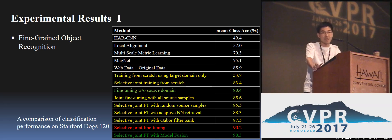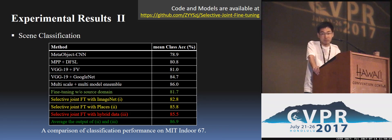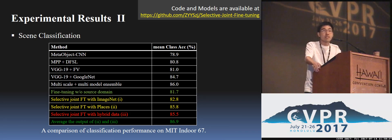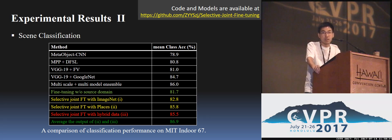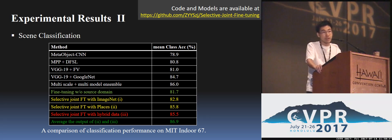For scene classification, if we use ImageNet as the source domain, the results become only slightly better. If we switch to Places instead, the results increase by 3%. All codes and models are released on GitHub. Thank you.